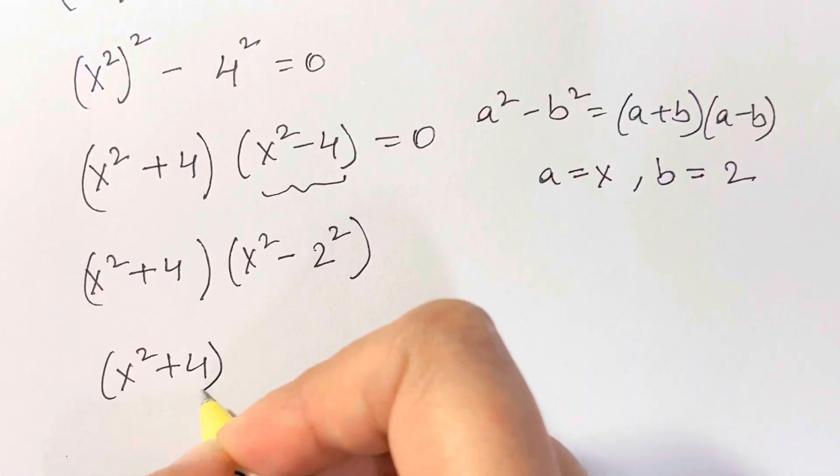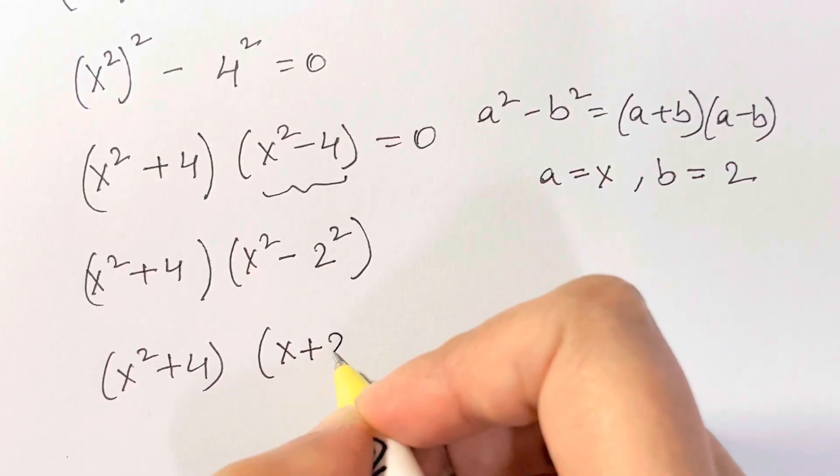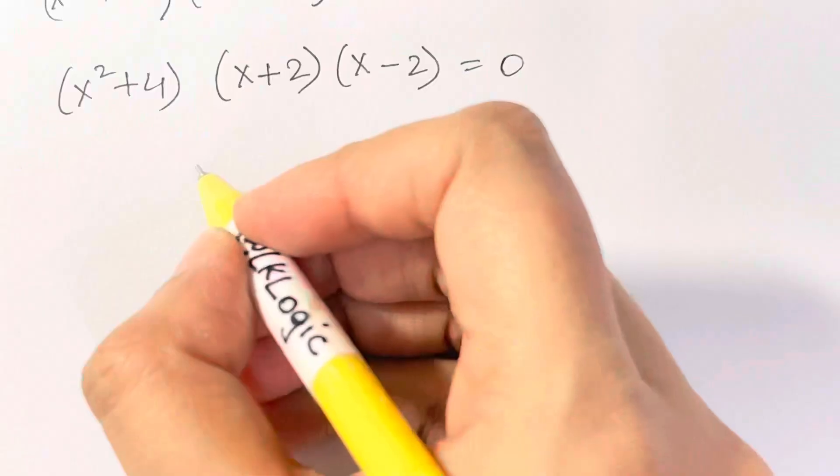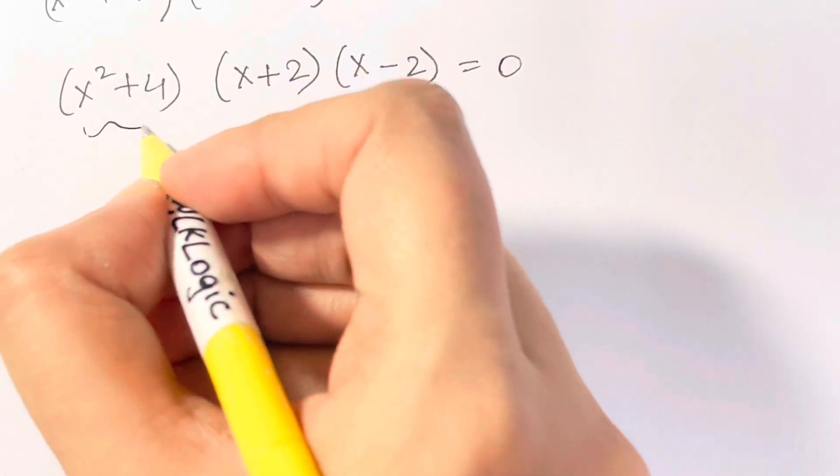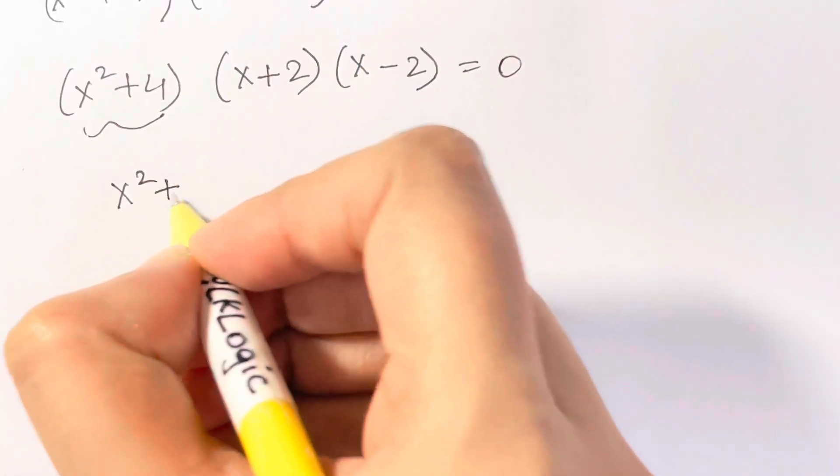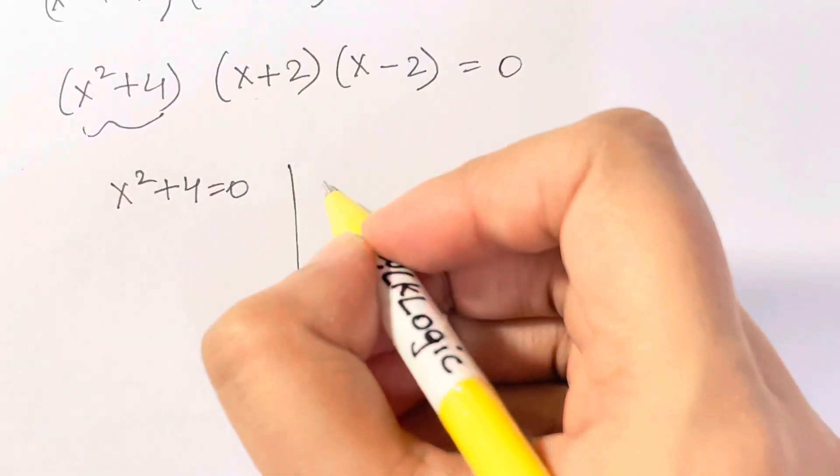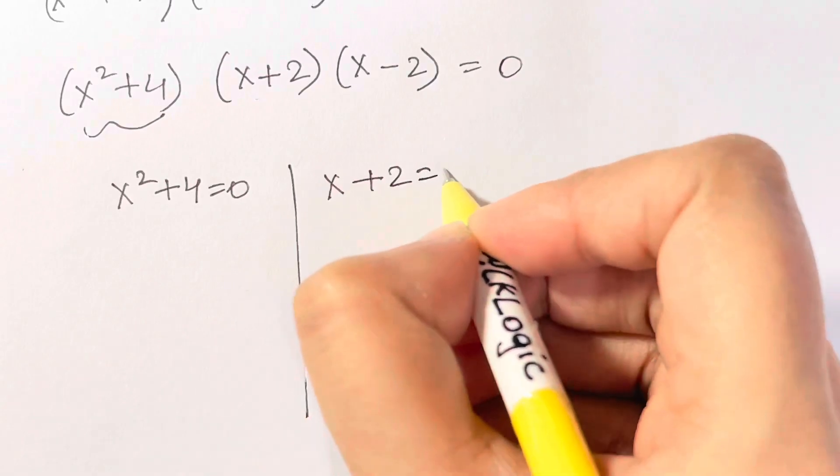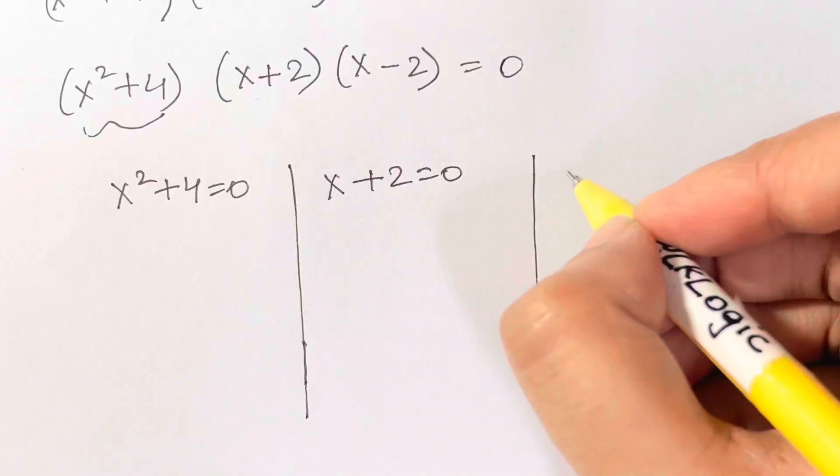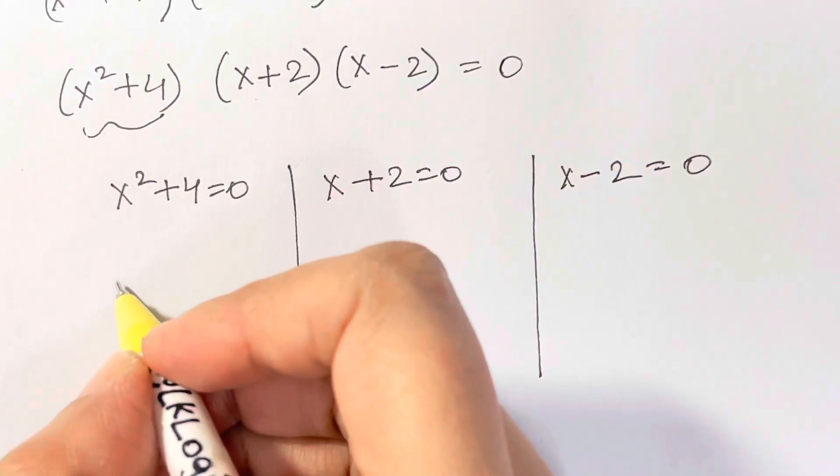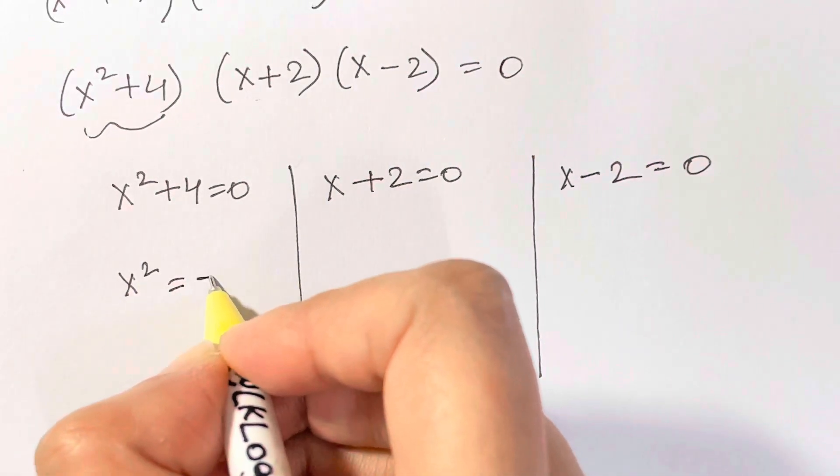(x squared plus 4) times (x plus 2) times (x minus 2) is equal to 0. So let's draw the first case, which is x squared plus 4 is equal to 0. The next one, we have x plus 2 is equal to 0, and x minus 2 is equal to 0. From here, x squared is equal to negative 4.